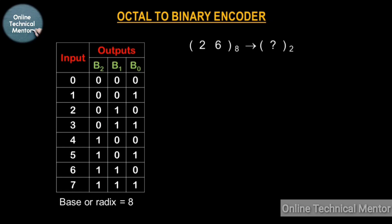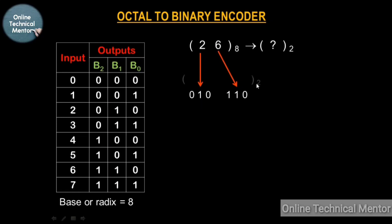Now if I ask you to convert an octal number, say 26, to binary form, you have to convert each and every digit of the octal number to its binary form individually. So 2 is written as 010 — look at the table, 2 is represented as 010. Similarly, 6 will be written as 110. Convert each digit of the octal number to its binary form and you will get the binary of 26. This means you are encoding 26 to binary form, and this process is known as encoding.